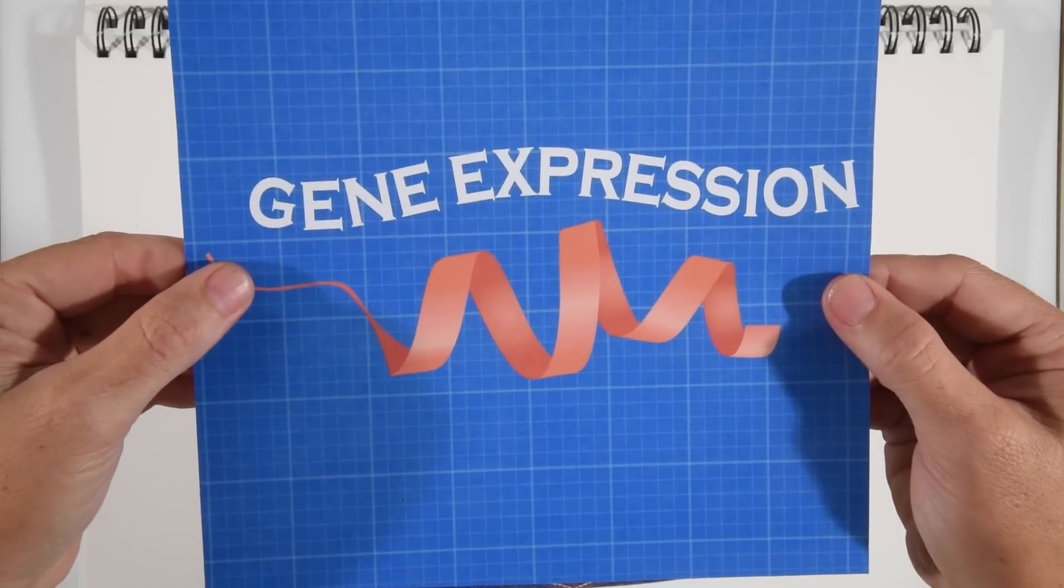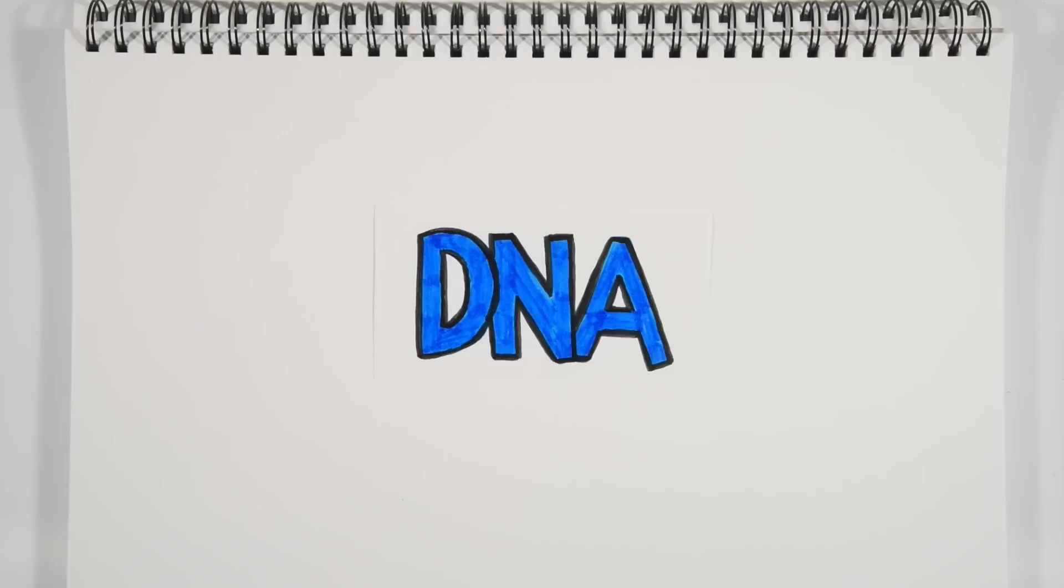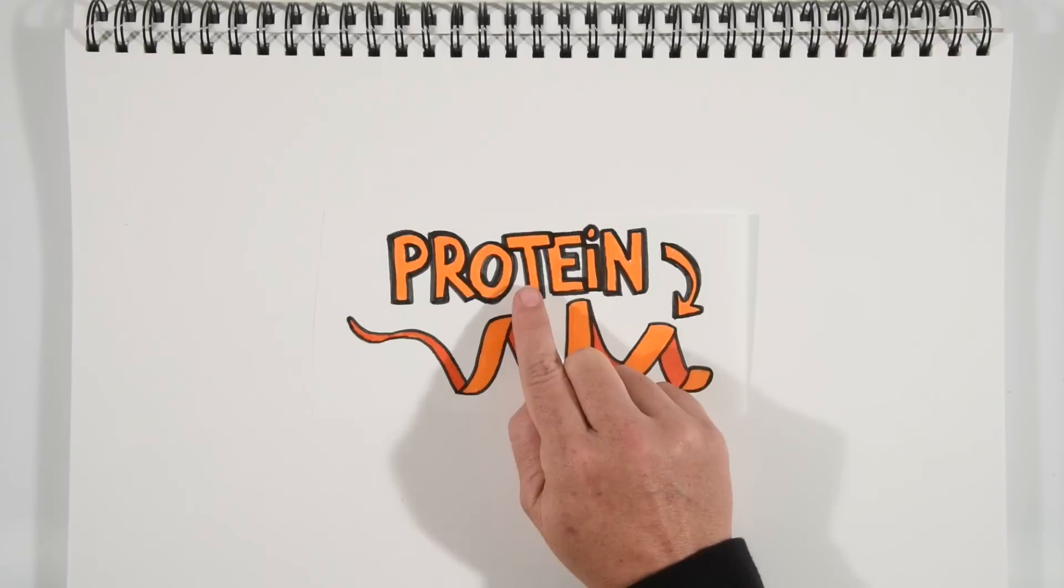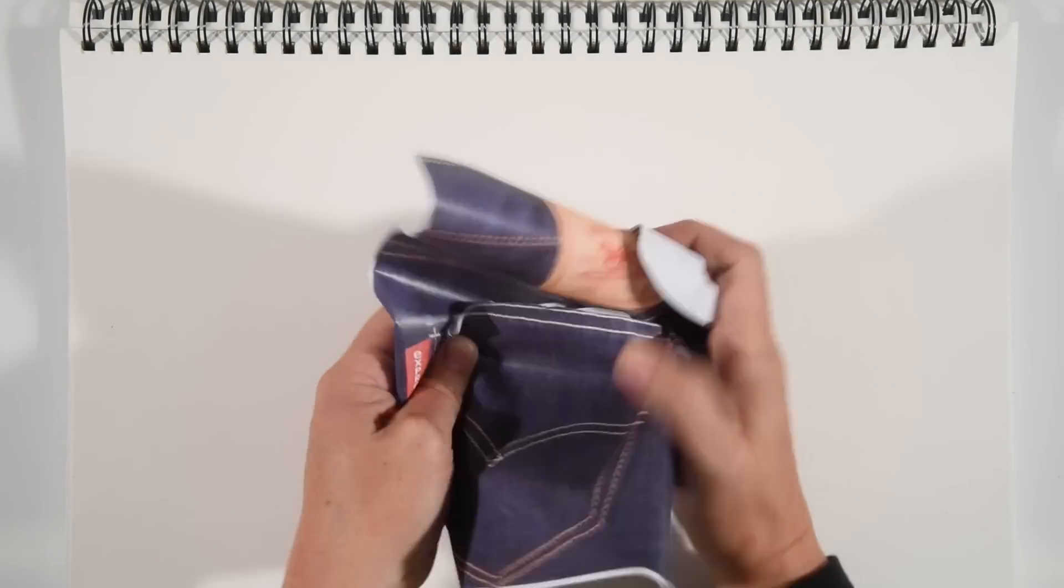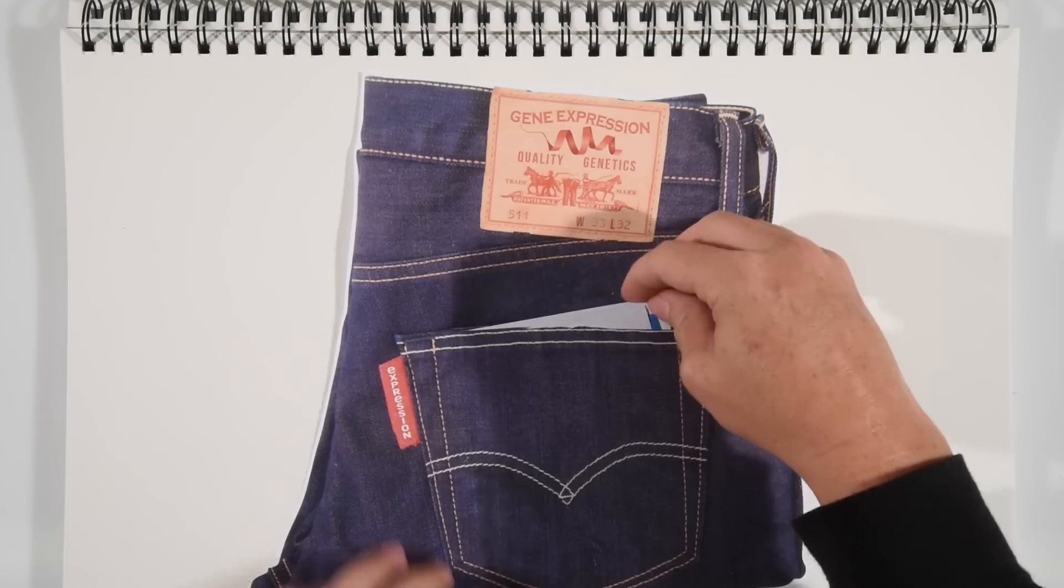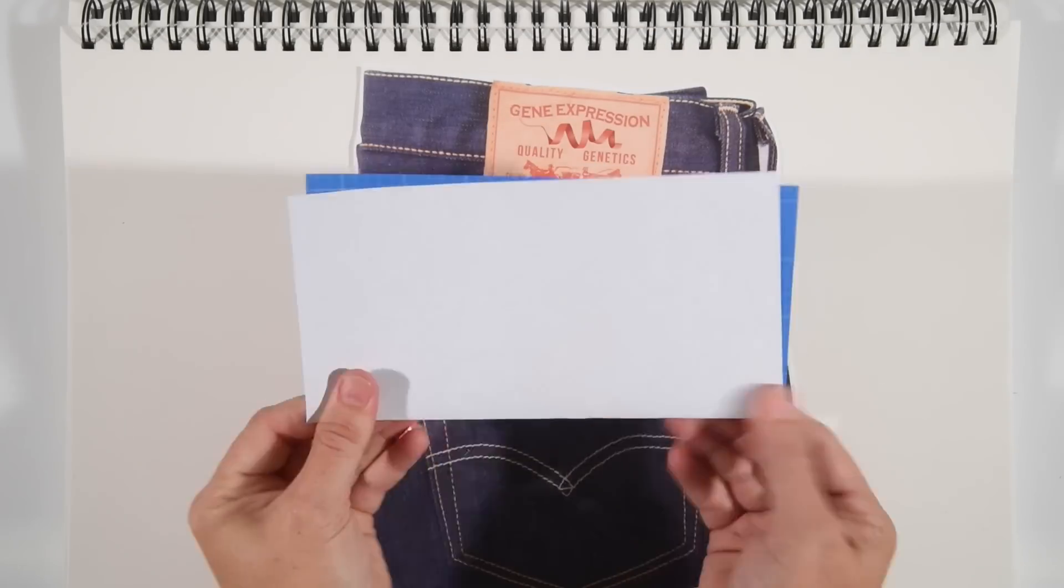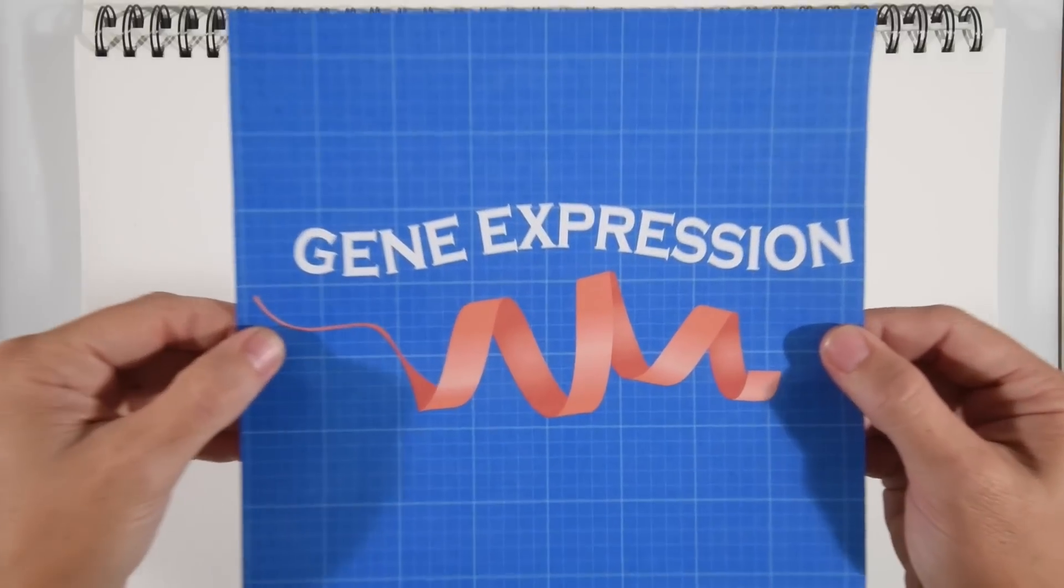What do we mean by gene expression? Well, DNA makes RNA makes protein. It's the way genes get expressed in our cells. Genes are the blueprint for all the proteins that our cells make. Simple, right?